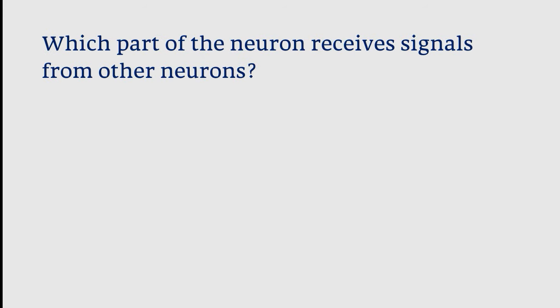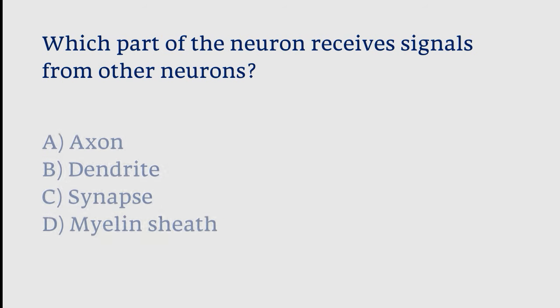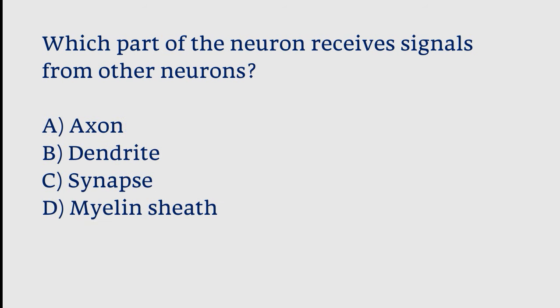Which part of the neuron receives signals from other neurons? Options: axon, dendrite, synapse, myelin sheath. The correct answer is option B. The dendrite receives signals from other neurons.